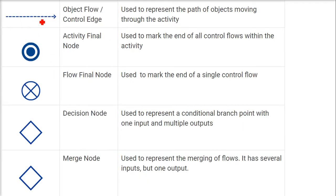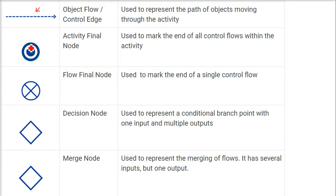Then we have a dashed line, which is the object flow or control edge. This is used to represent the path of objects moving through the activity. The final symbol is the activity final node — a circle with a filled inner circle — which marks the end of the complete activity.